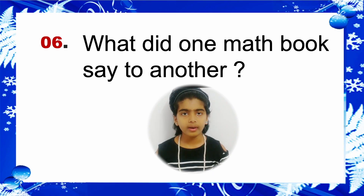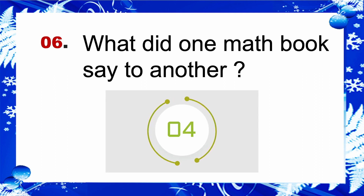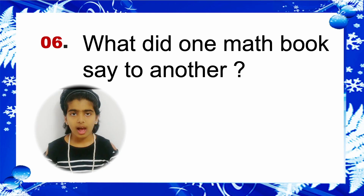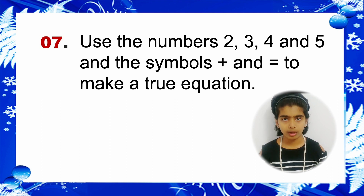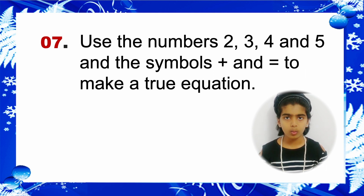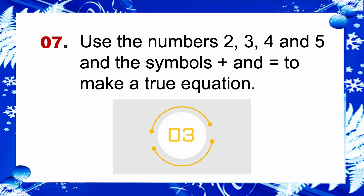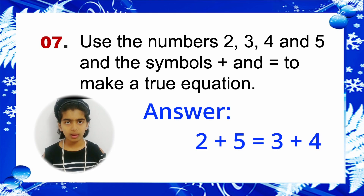Riddle 6: What did one math book say to another? Riddle 7: Use the numbers 2, 3, 4, and 5 and the symbols plus and equals to make a true equation. Answer: 2 plus 5 is equal to 3 plus 4.